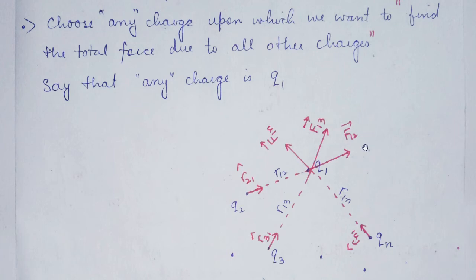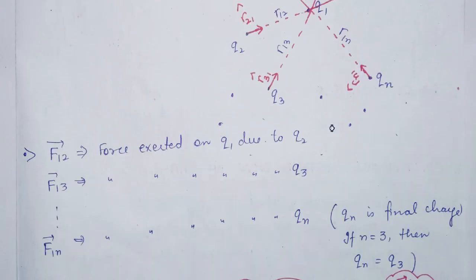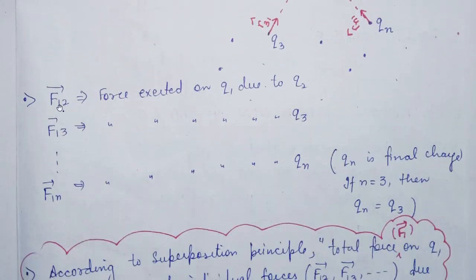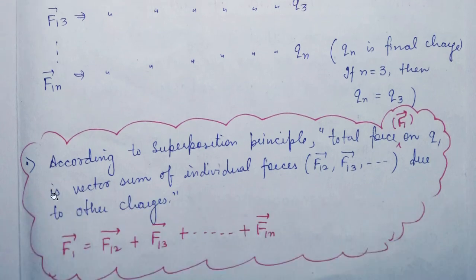Now we want to find the total force on this charge q1, and according to the principle of superposition, the total force will be the vectorial sum of all these forces. F12 is the force exerted on 1 due to 2, F13 is the force exerted on 1 due to 3, and so on to F1n. How will we add all these forces? Vectorially. When the number of charges increases, the number of forces increases.